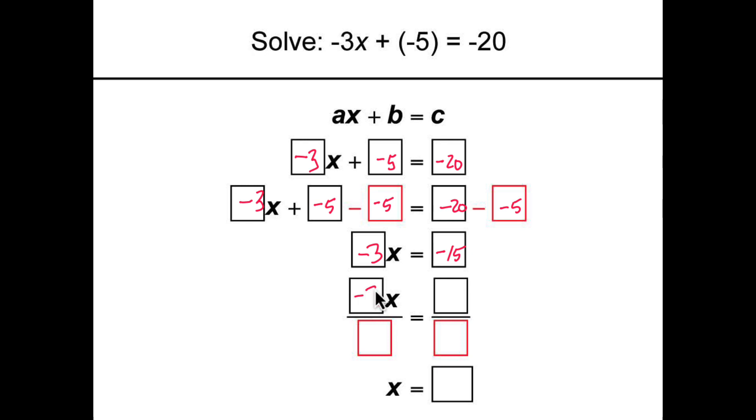So we get negative 3x divided by negative 3. It's equal to negative 15 also divided by negative 3. As you can see, both sides of the equation are divided by negative 3. Simplifying, we get x equals 5.